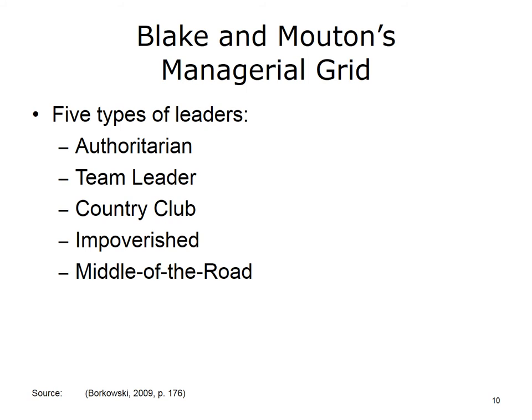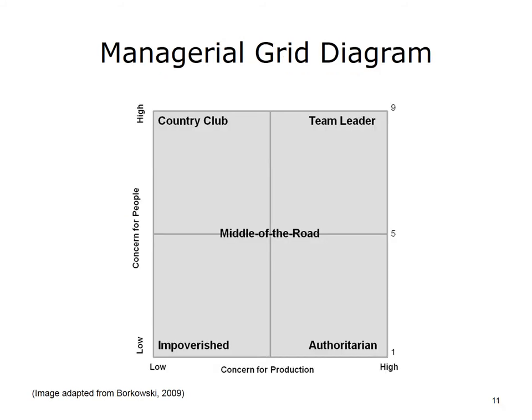Let's begin our study of the various leadership theories by looking at Blake and Mouton's managerial grid. Blake and Mouton define five types of leaders: authoritarian, team, country club, impoverished, and middle-of-the-road. Each type of leader is represented on what they call a managerial grid, founded on two axes. Concern for people is located on the vertical axis, while concern for production is located on the horizontal axis. The range on each of these axes goes from 1 to 9, with 1 signifying low and 9 signifying high.